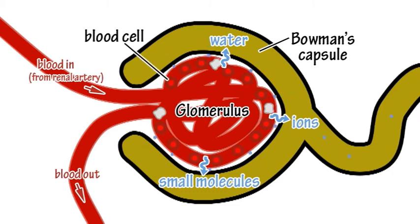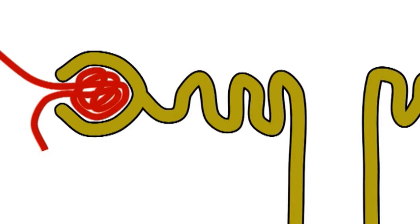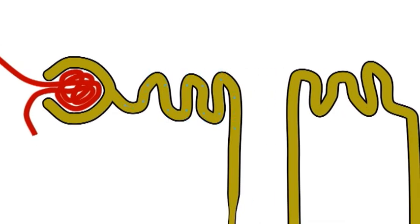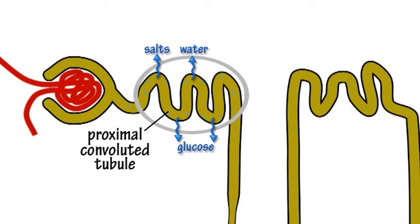While the larger components of blood, such as blood cells and proteins, stay behind in the blood vessels. The filtered liquid, called ultrafiltrate, flows into the proximal convoluted tubules, where glucose, salts and water are reabsorbed and put back in the blood to be transported away through the renal veins.